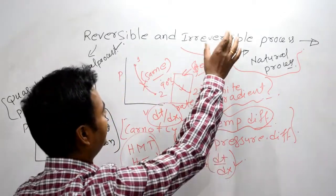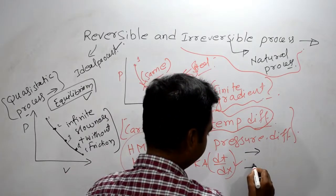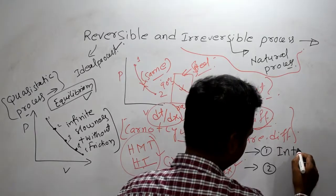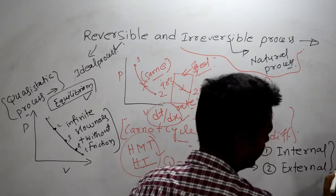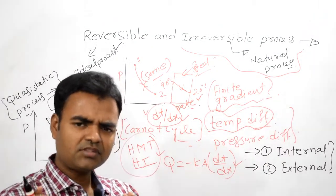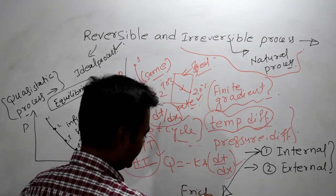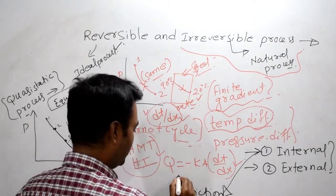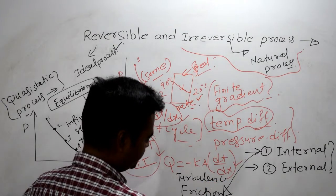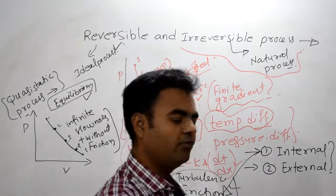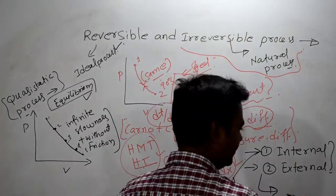Coming back to irreversibility: there are two types of irreversibility — internal irreversibility and external irreversibility. Internal irreversibility happens because of friction and dissipating effects such as turbulence and electrical resistance. External irreversibility happens because of finite temperature difference or finite pressure difference.